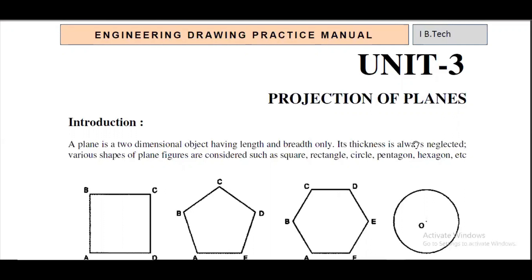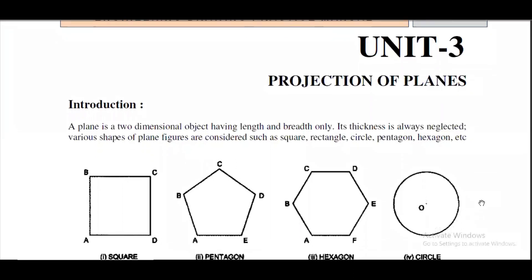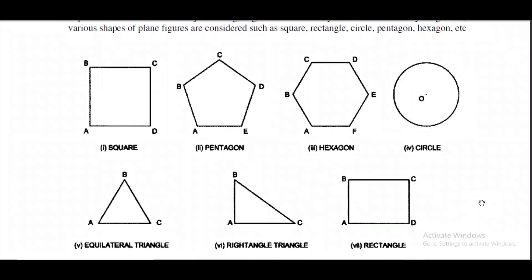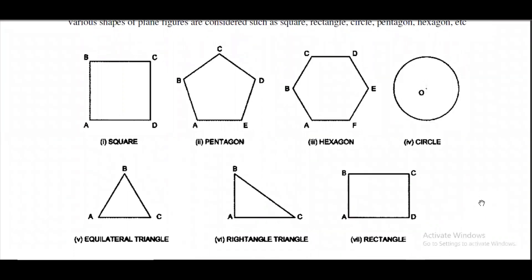Mainly coming to the projection of planes, projection of planes is a two-dimensional object having length and breadth, and in these projection of solids we neglect the thickness of the planes. Coming to the planes, the main shapes are square, pentagon, hexagon, circle, equilateral triangle, right angle triangle, and rectangle. These are some of the main planes which we will be dealing in this chapter.